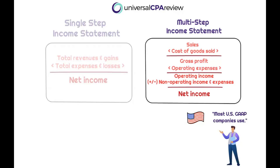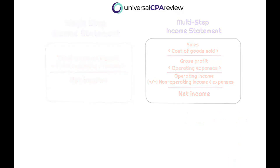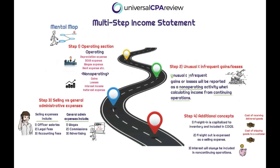The multi-step income statement is a little bit more robust, a little bit more broken out — there's more detail that financial statement readers want to see. If you're studying for the CPA exam, you're likely familiar with the income statement and might think it's easy: revenues minus expenses. And although you're not wrong, there are some sneaky things that could pop up and cost you dumb points. So we need to build ourselves a mental map.